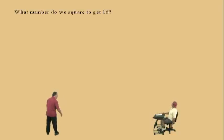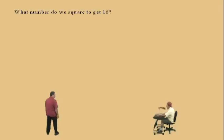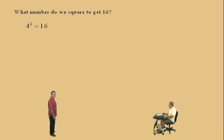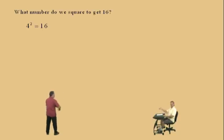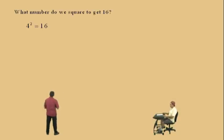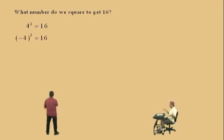Okay, pay attention, Charlie. What number do we square to get 16? Four. That's right, you just did a square root. Pay attention, Charlie. If somebody asks you what number do we square to get 16, it's 4 because 4 squared is 16, but it is also negative 4 because negative 4 squared is 16, right?